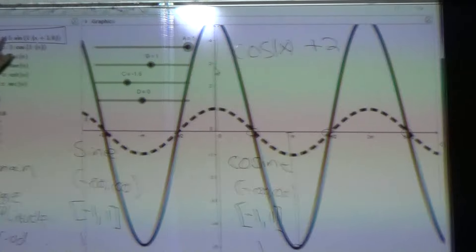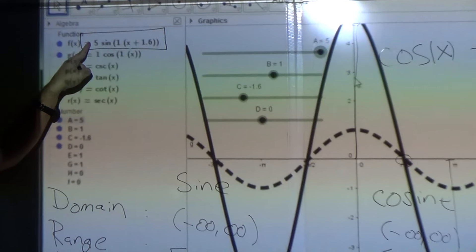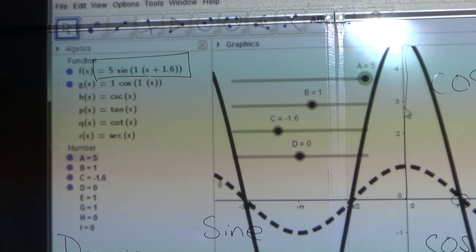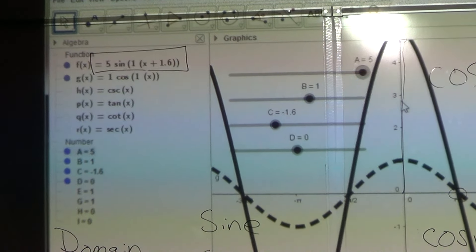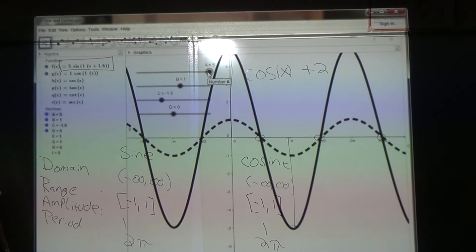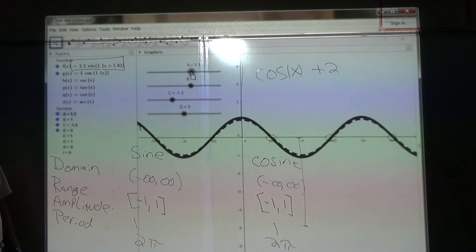Over here, we'll learn later on that the number in front of your trig identity, your trig function, sine and cosine, is going to be your amplitude when you take the absolute value. All right. Go ahead and take A back to 1, please.